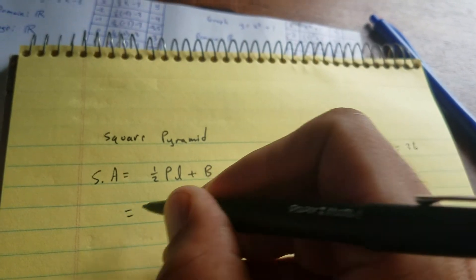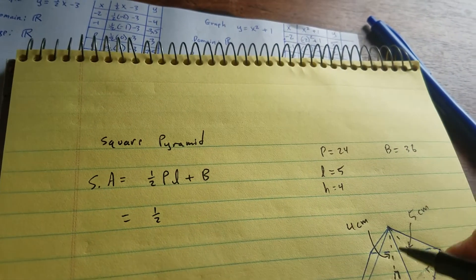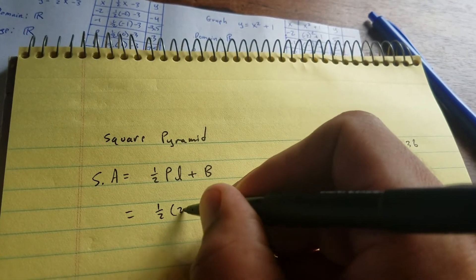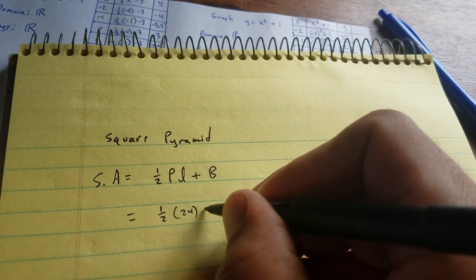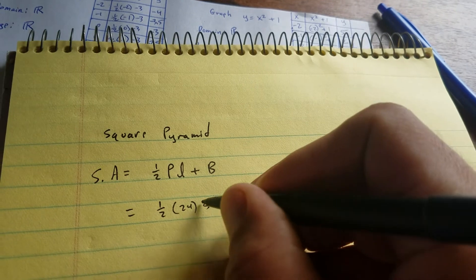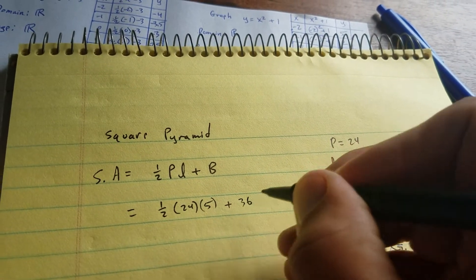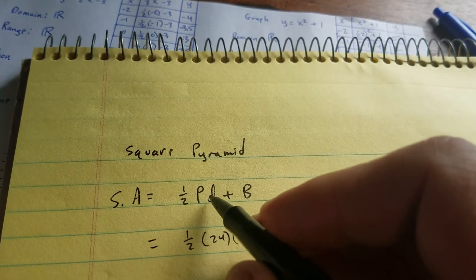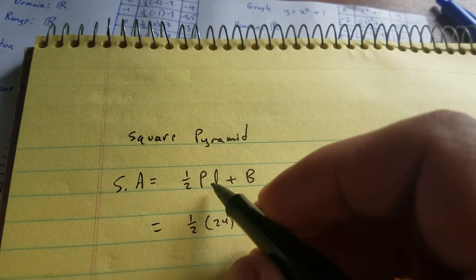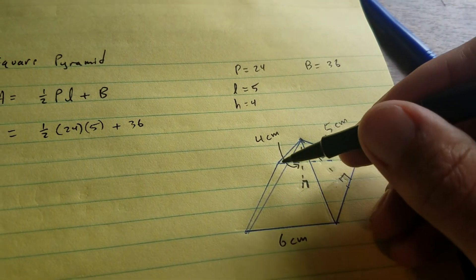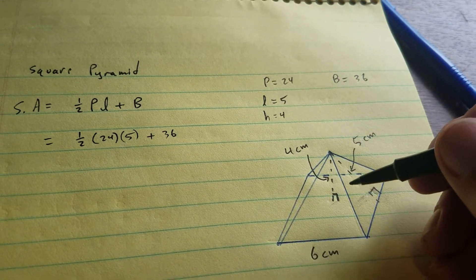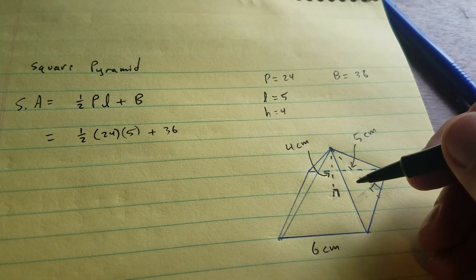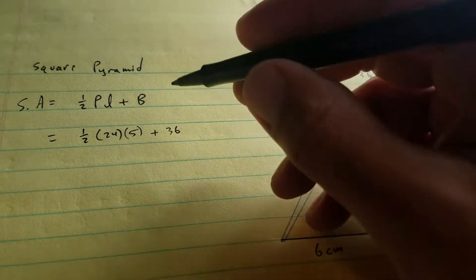That is one-half times 24 times the slant length of 5 plus the area of the base, which is 36. Keep in mind that this first part represents the area of the four triangles. One-half times perimeter times length gives the area of the four triangles combined, and the B gives you the area of the base.